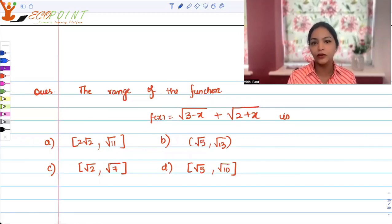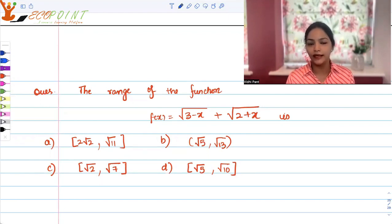Hey guys, welcome back to another video. Today I have a question from functions. We need to find the range for the following function: f(x) equals square root of 3 minus x plus square root of 2 plus x. These are the options: closed interval 2 root 2 to root 11, open interval root 5 to root 13, closed root 2 to root 7, or root 5 to root 10.